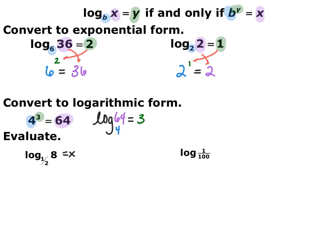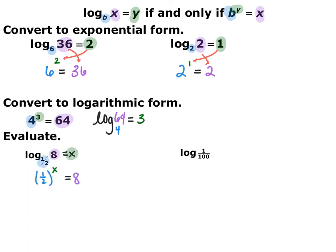To evaluate a logarithm by hand, the way I do it is I set it equal to x and then switch it into exponential form. Pause the video and switch log base one-half of 8 equals x into exponential form. If I switch this into exponential form, base stays the same and input and output switch, so I end up with one-half to the x equals 8.